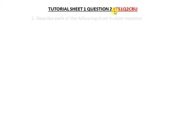If you want question three, you put q3; question four, you put q4. When we move to tutorial sheet two, this changes to ts2, and then q1, q2, or q3, with cpu at the end.